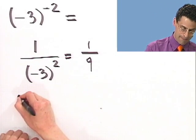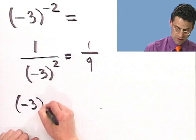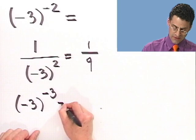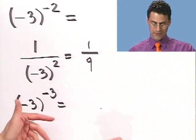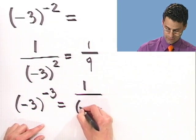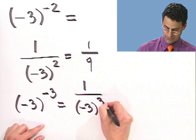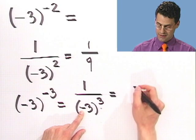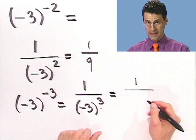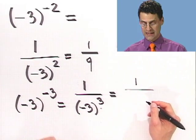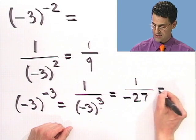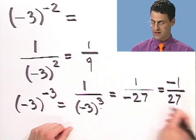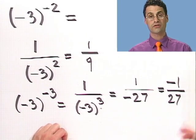Let's try another one: minus 3 raised to the minus 3 power. The negative sign means I flip the whole thing: 1 over minus 3 cubed. I have to multiply negative 3 by itself three times. Negative 3 times negative 3 is 9, times negative 3 is negative 27. So I get negative 1 over 27.